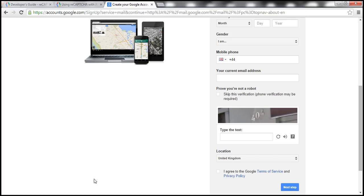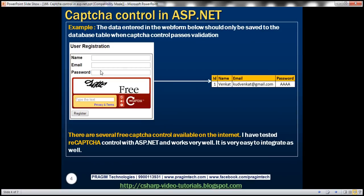Let's look at an example now. What we want to do is design a user registration page. As you can see, we want to capture name, email, and password of the user. We also want to display a CAPTCHA control on the page. Once the user clicks the register button, if the user has correctly entered the characters displayed within the CAPTCHA control in the text box, only then we want to allow those values to be saved to the registered users table on the right.